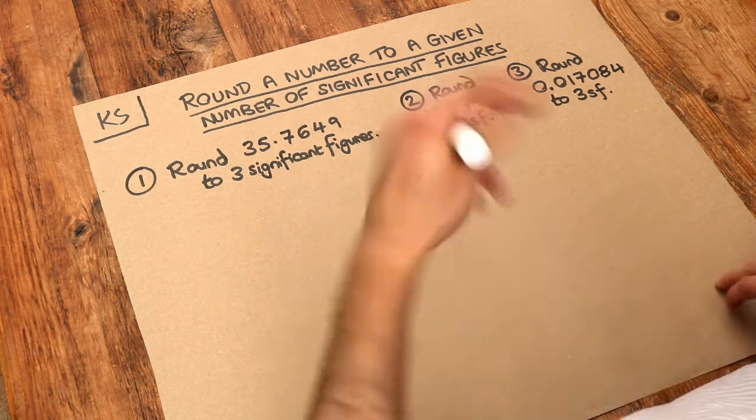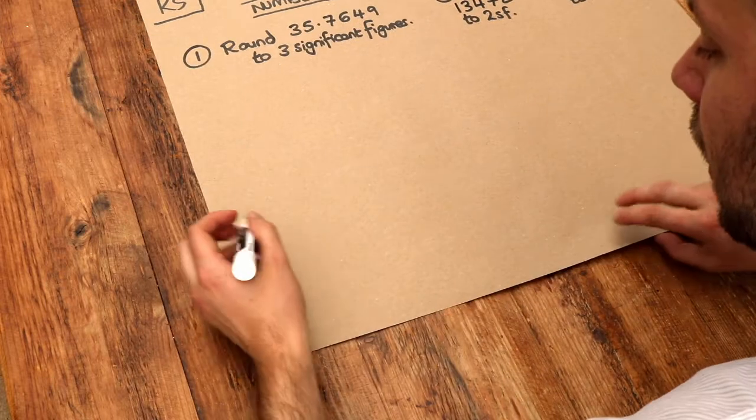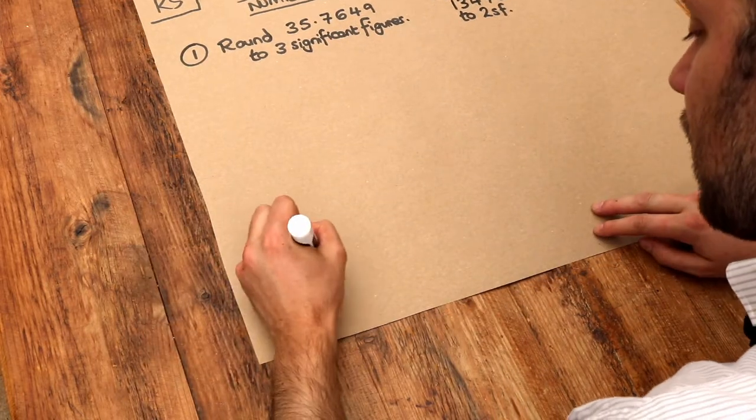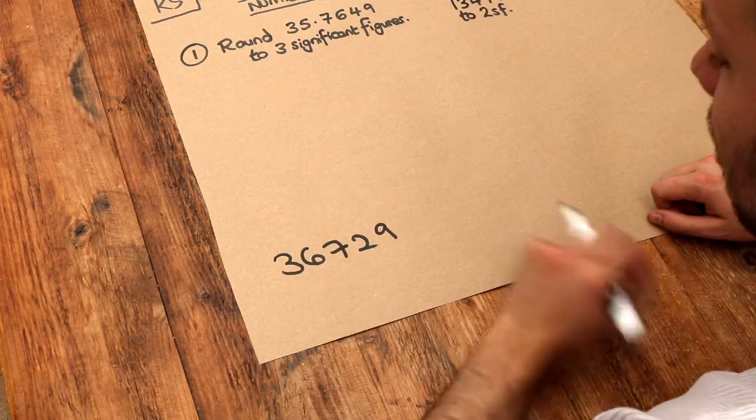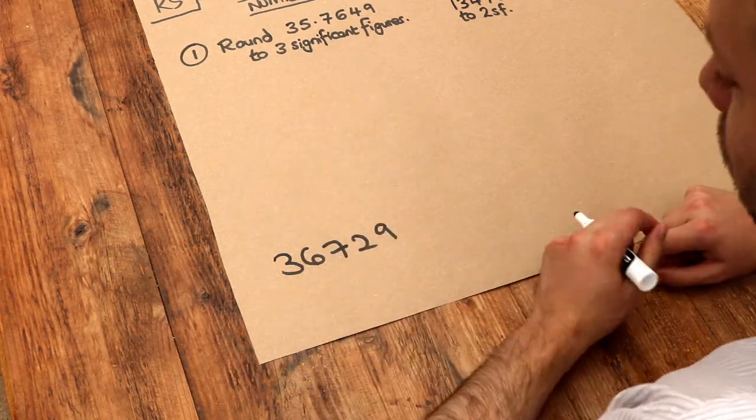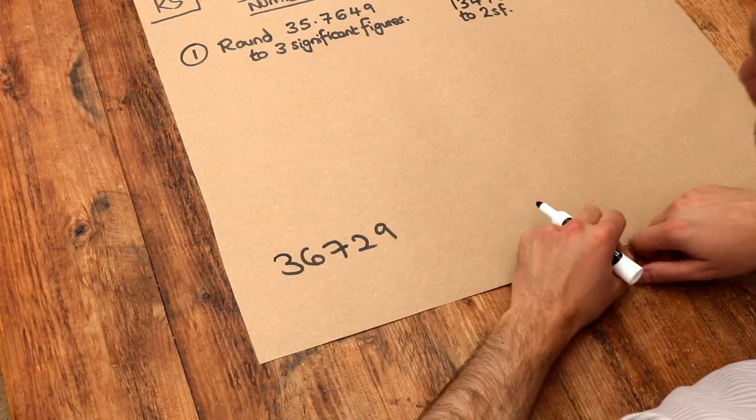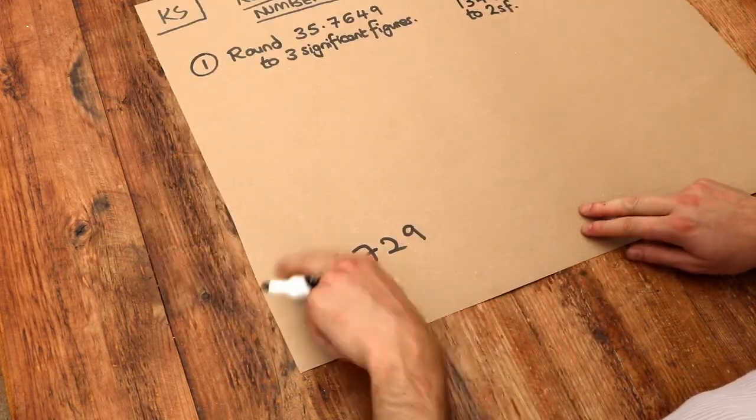Now imagine you're a sports journalist and you had a certain number of people in the stadium. Let's just say there was, I don't know, 36,729 people in the stadium. It's a large stadium. Now in your article, how would you write the number of people that were in the stadium? You wouldn't want to give the precise figure.